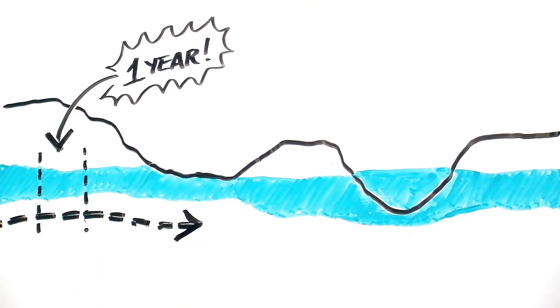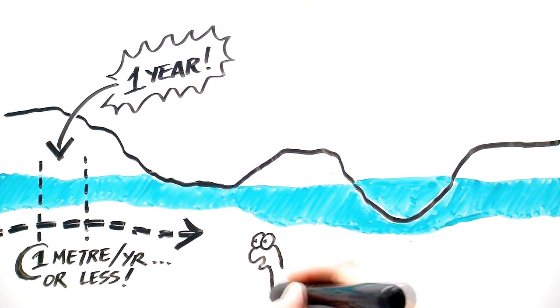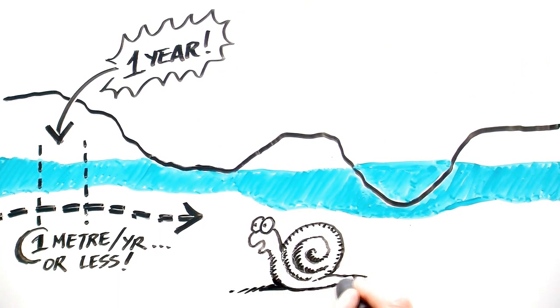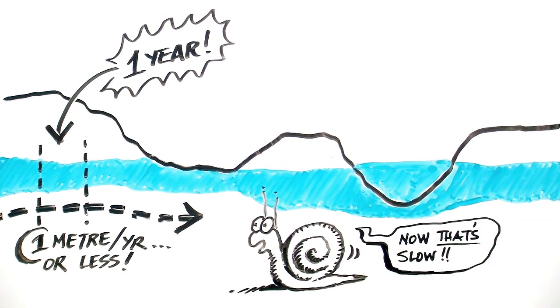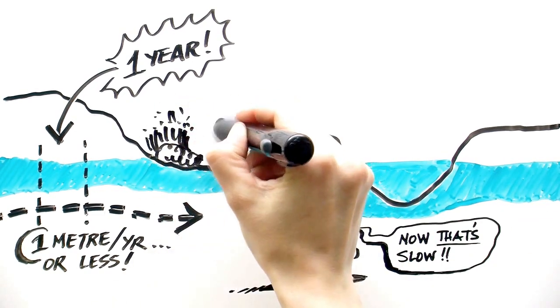Groundwater flows a lot slower than streams and rivers on the earth's surface. It can flow as slowly as one meter a year or less. Eventually, groundwater can find its way back to the earth's surface.